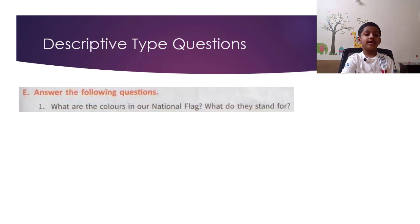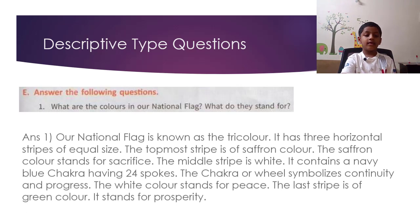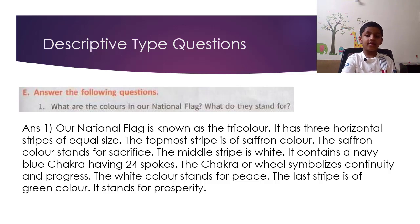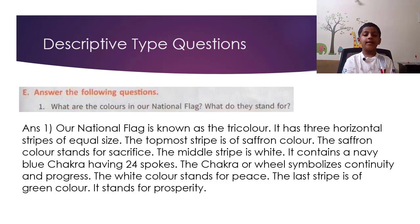Descriptive Type Questions. E. Answer the following questions. Question 1: What are the colours in our national flag? What do they stand for? Answer: Our national flag is known as the tricolour. It has three horizontal stripes of equal size. The topmost stripe is saffron, which stands for sacrifice. The middle stripe is white and contains a navy blue chakra with 24 spokes. The chakra symbolises continuity and progress. The white colour stands for peace. The last stripe is green, which stands for prosperity.